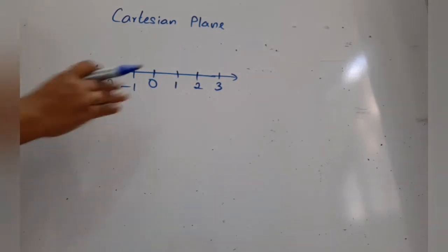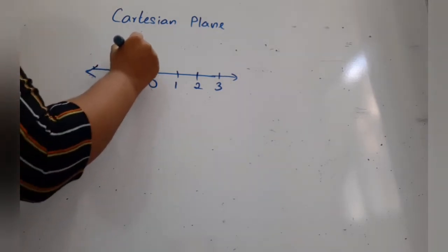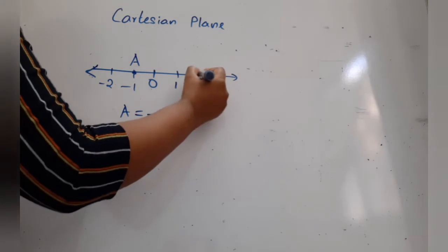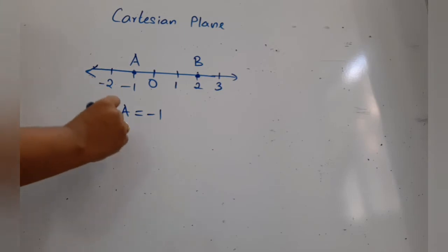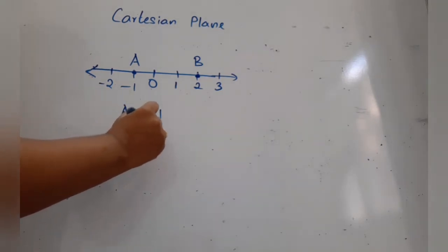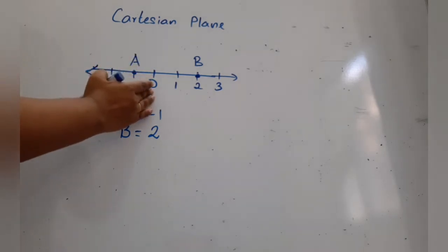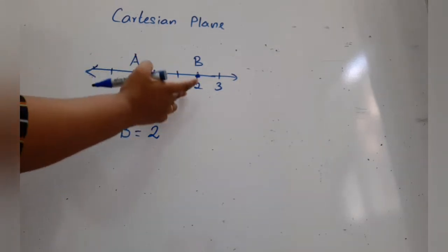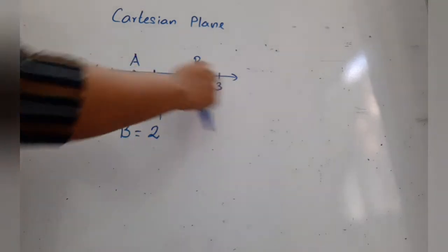We used to mark points on this number line. For example, the value of point A is negative one, and there is a point B here whose value is positive two. Zero is in the middle, and on either side of zero the positive and negative values continue.